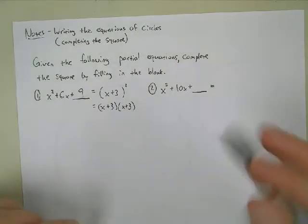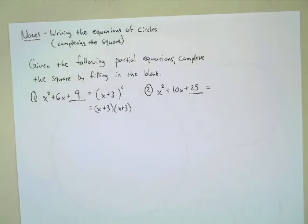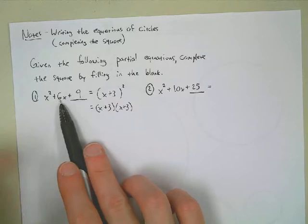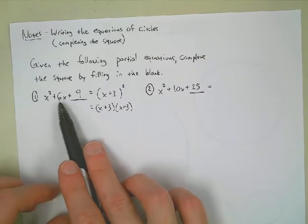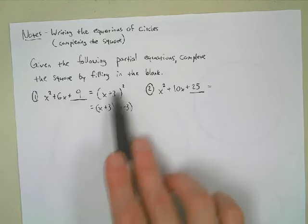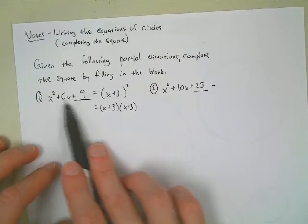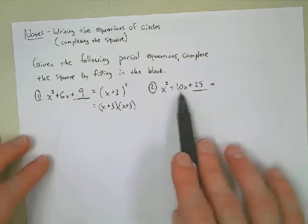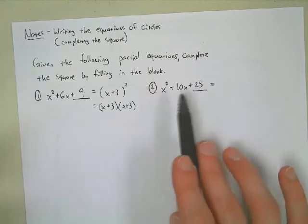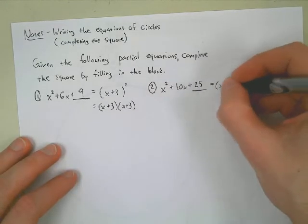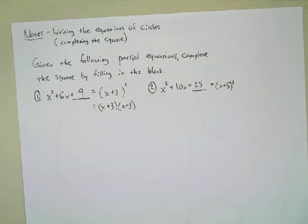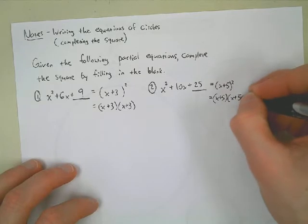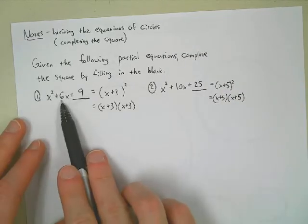It's 25. If we take half of the middle term — half of 10 is 5 — and square it, we get 25. So x squared plus 10x plus 25 is a perfect square, equal to x plus 5 times x plus 5. The idea: take the middle term, find half of it, and square it to get that number.